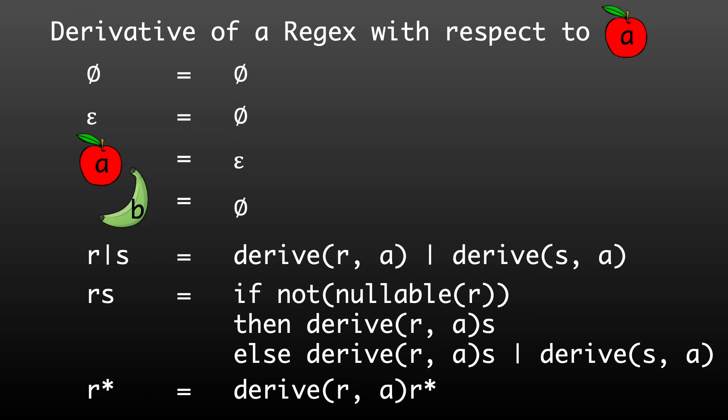Finally, we have the star operator. It matches an expression zero or more times, and since we are being passed a character this is not the zero case. So we take the derivative of the expression inside the star and concatenate it again with the zero or more expression. And that's the derivative function. We can combine the nullable function with the derivative function to create the regular expression matching function shown earlier.